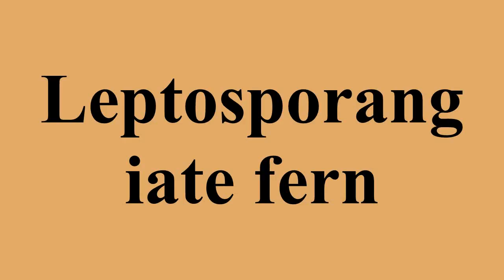These ferns are called Leptosporangiate because the sporangia arise from a single epidermal cell, and not from a group of cells as in Eusporangiate ferns. The sporangia are typically covered with a scale called the indusium, which can cover the whole sorus, forming a ring or cup around the sorus, or can also be strongly reduced to completely absent. Many Leptosporangiate ferns have an annulus around the sporangium, which ejects the spores.